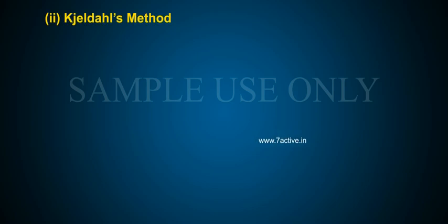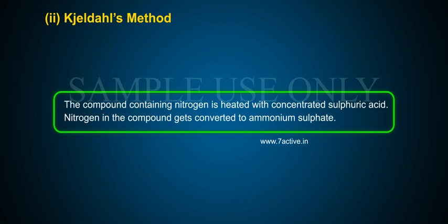Kjeldahl's method. The compound containing nitrogen is heated with concentrated sulfuric acid. Nitrogen in the compound gets converted to ammonium sulfate.